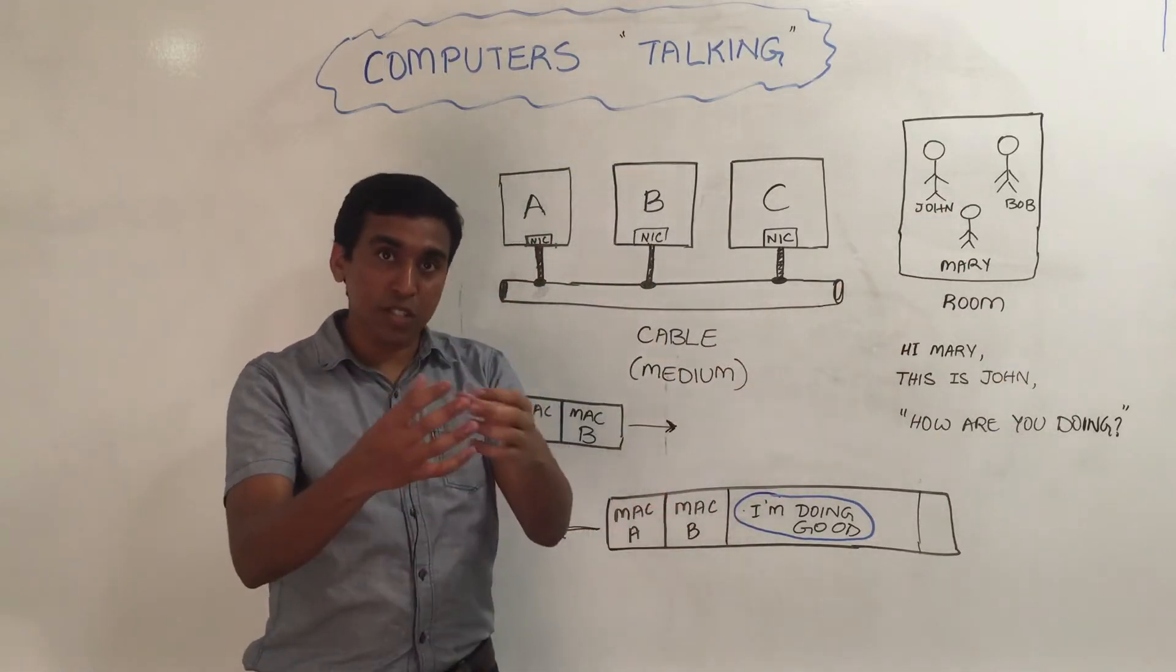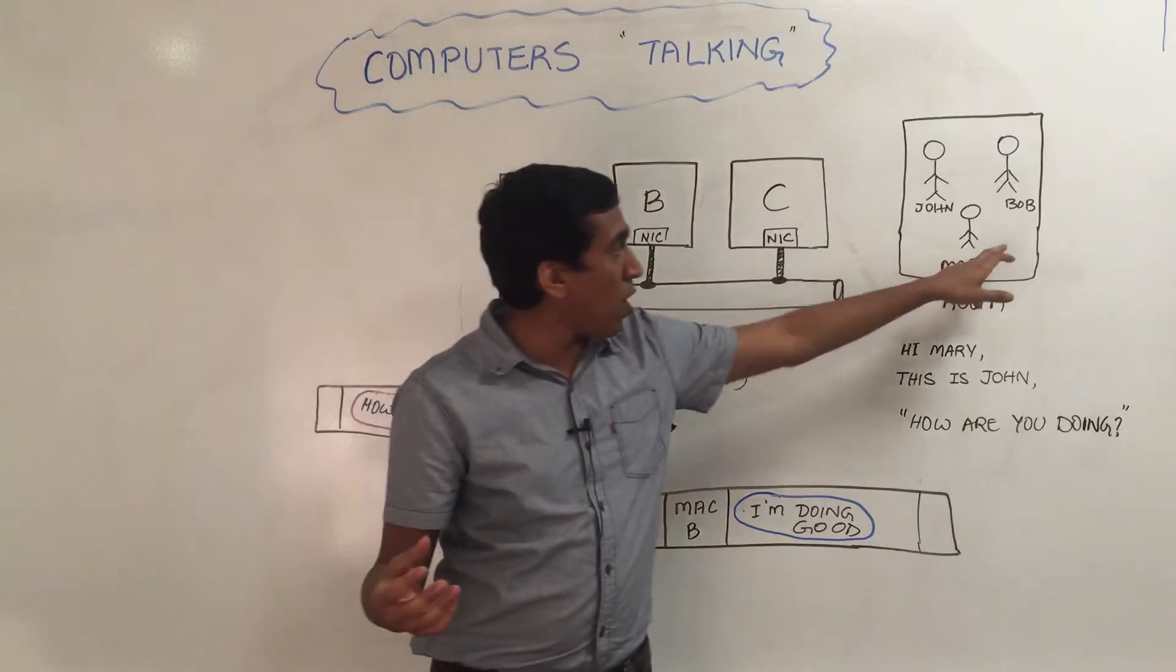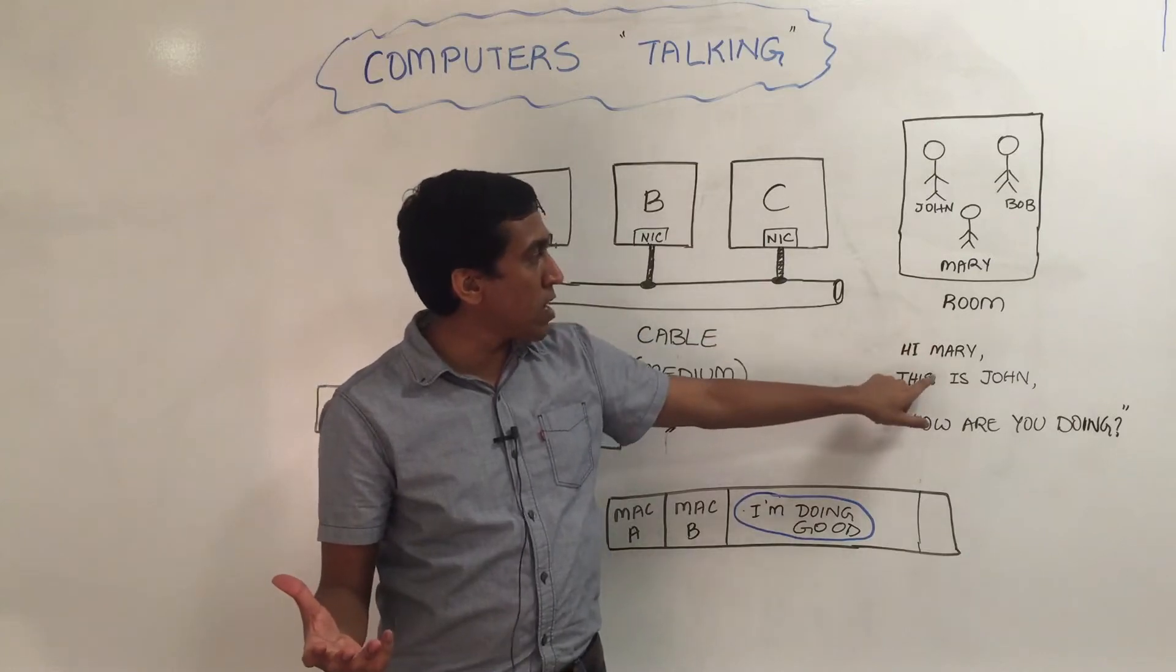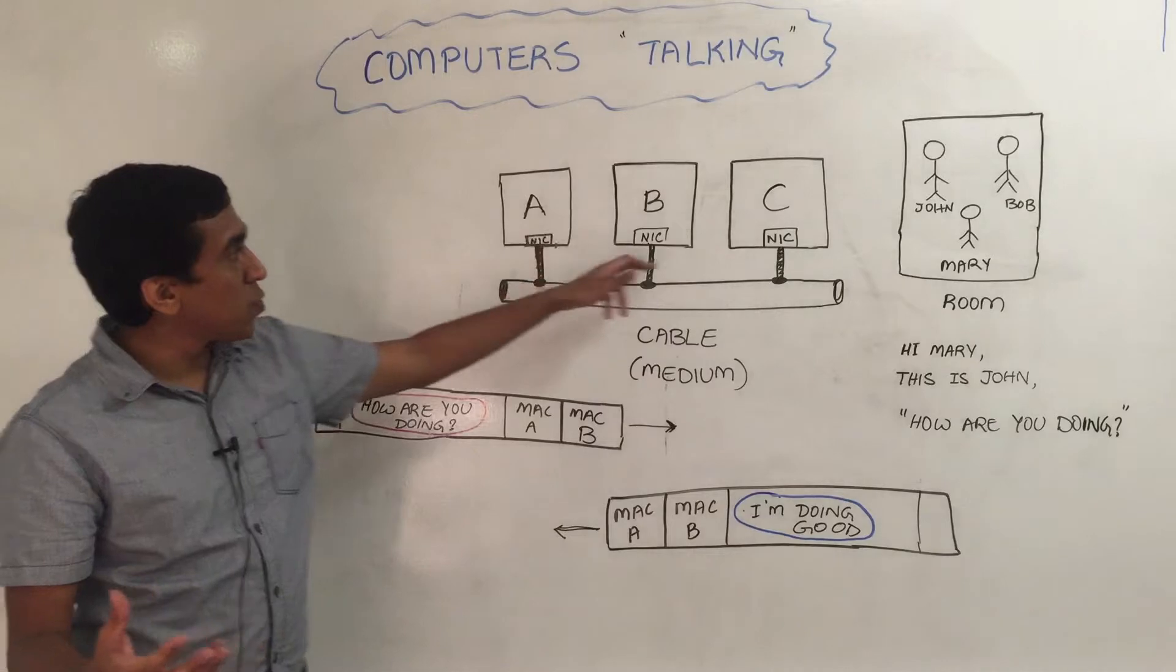Now when they're in the same room, they are sharing the same medium, which is the air, and all of them, Bob and Mary, hear this message. But only Mary responds because it's addressed to Mary. In the same way, when computers want to talk, they share a medium.